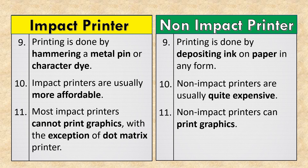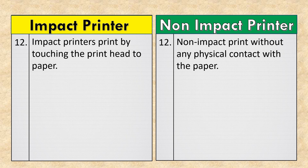Most impact printers cannot print graphics, with the exception of dot matrix printers. Non-impact printers can print graphics. Impact printers print by touching the print head to paper, while non-impact printers print without any physical contact with the paper.